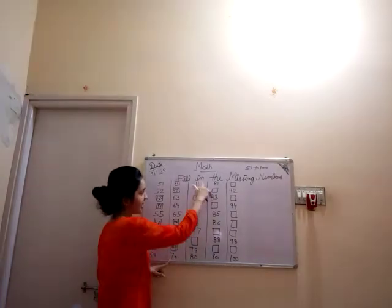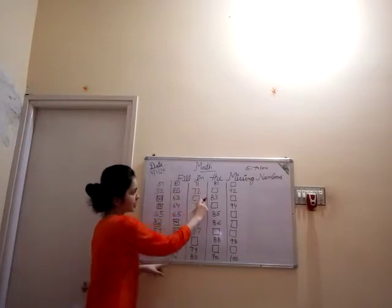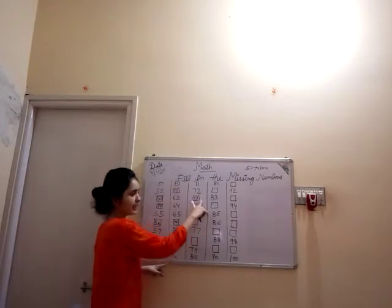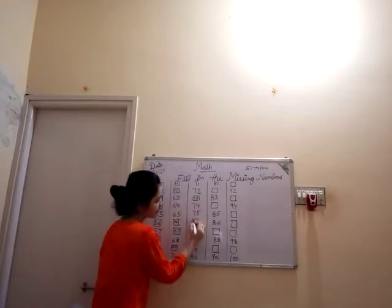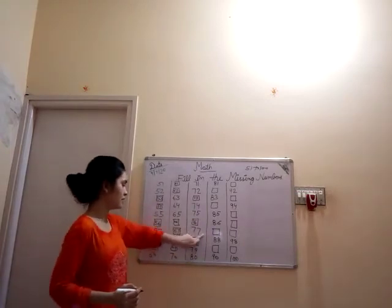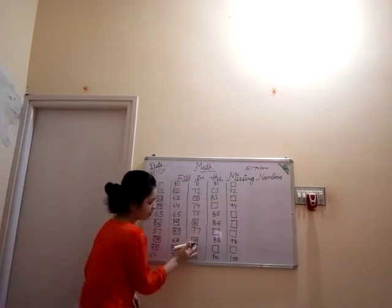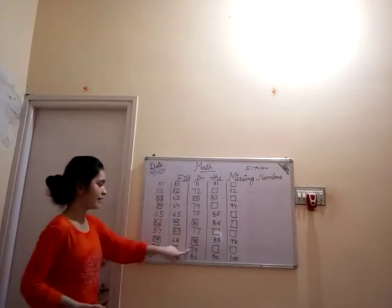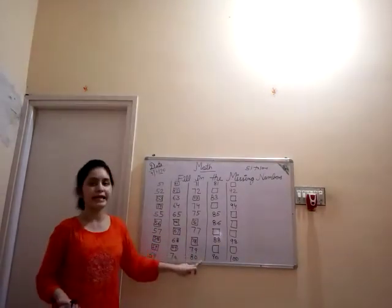70 ke bad? 7, 1, 71. 71 ke bad? 7, 2, 72. 72 ke bad? 7, 3, 73. 73 ke bad? 7, 4, 74. 74 ke bad? 7, 5, 75. 75 ke bad kya atar? 7, 6, 76. 76 ke bad? 7, 7, 77. 77 ke bad? 7, 8, 78. 78 ke bad? 79. 79 ke bad? 8, 0, 80.